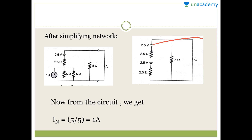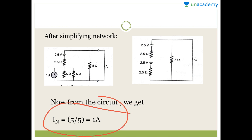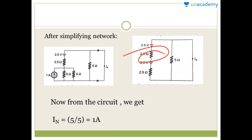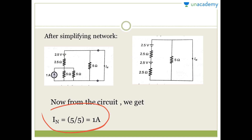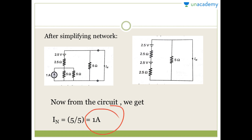Here we have 5 ohm, 2.5 ohm, 2.5 ohm, 2.5 ohm, and 5 ohm total resistance, with total battery 2.5 V and 2.5 V making 5 V again. In order to find I_N: the resistance is 5 ohm, the voltage is 5 V, so 5 divided by 5 gives 1 ampere. Our required answer is 1 ampere.